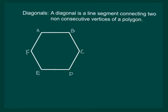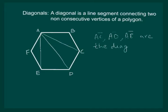Now leaving B and F, if we join A with C, A with D and A with E, then the line AC, AD and AE are the diagonals of hexagon.